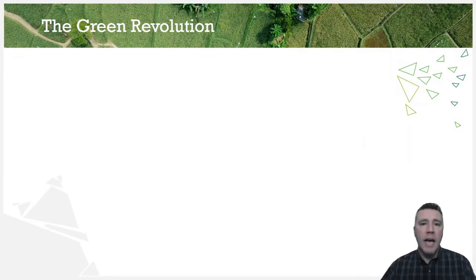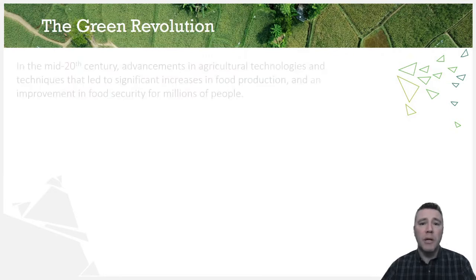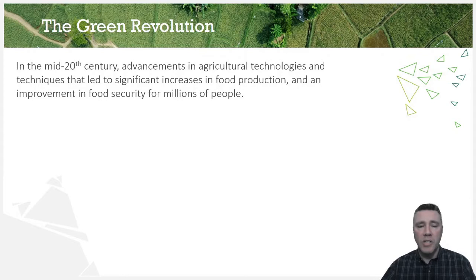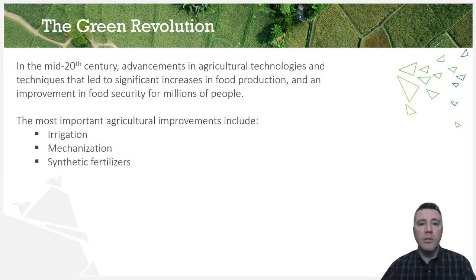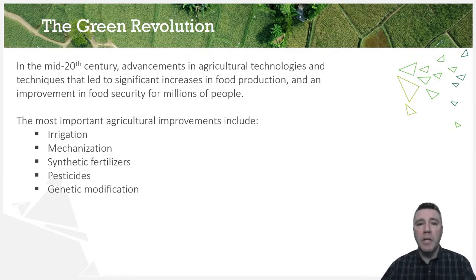For most of the time after the Agricultural Revolution, the manner in which food was grown and raised remained relatively similar. But beginning in the mid-20th century, advancements in agricultural technologies led to a significant increase in global food production. Key innovations include irrigation, mechanization, synthetic fertilizers, pesticides, and genetic modification — improvements that increased food availability, decreased the prevalence of famine, and improved food security for millions of people around the globe.